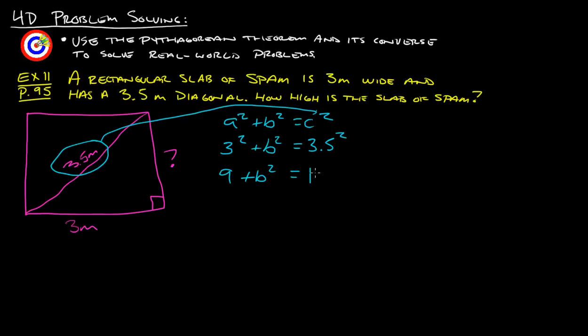It gives us 12.25. Now we'll want to subtract 9 from both sides so that we can get our b squared all by itself. So we get 12.25 minus 9 gives us 3.25.